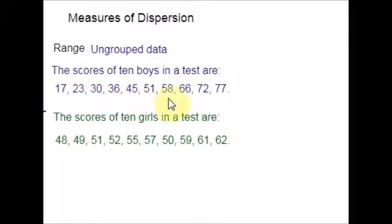In part A, the highest score is 77 and the lowest score is 17. The list is already arranged in ascending order. Just apply the formula for Range: highest score minus lowest score. So, range for part A would be 77 minus 17, which equals 60.